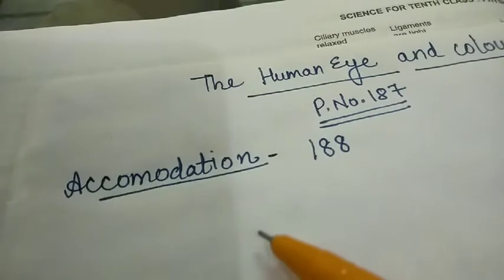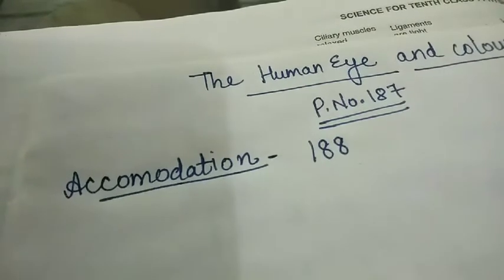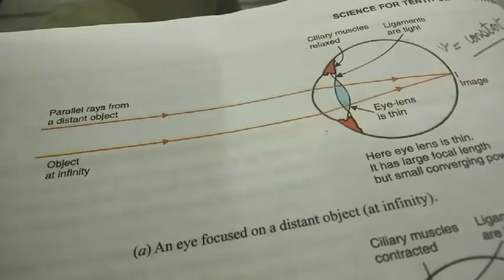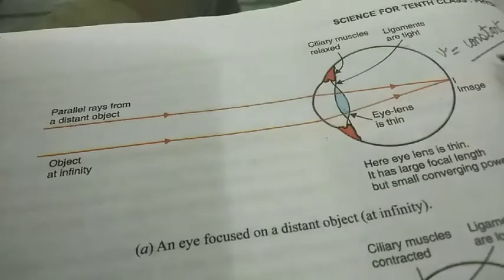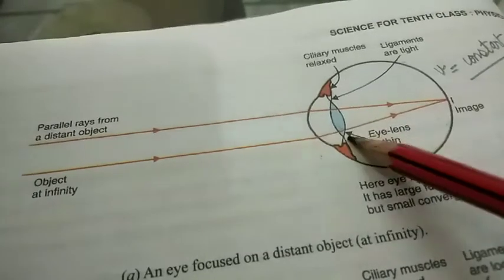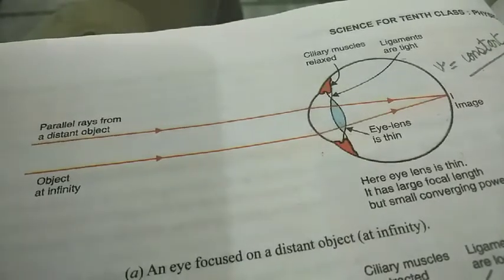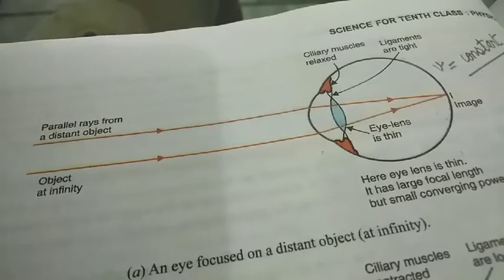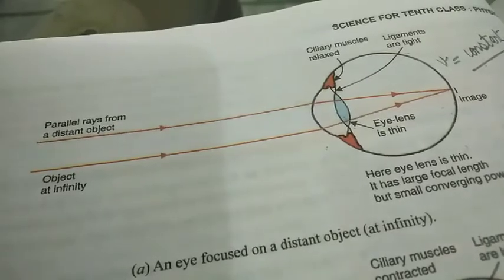Next topic we have to take today is accommodation of an eye, present in your book on page number 188. As we know, a normal eye can see nearby objects and far-off objects clearly, only when the images of these objects are formed on the retina. The distance between the eye lens and the retina is fixed — that means V is constant. So to see objects at different positions, the focal length of the lens has to be changed accordingly to form sharp images.